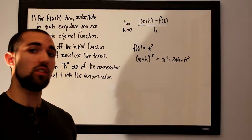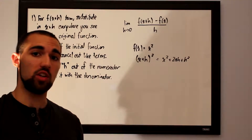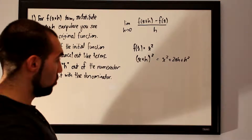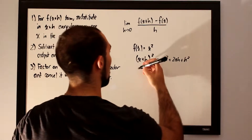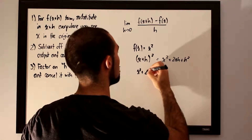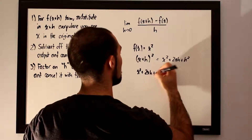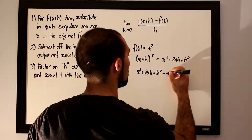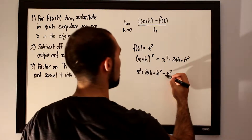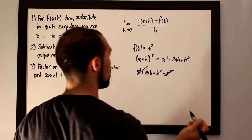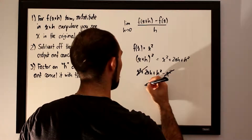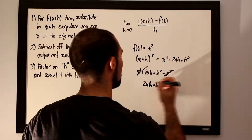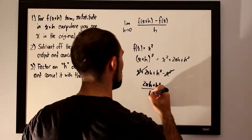Distribution is always going to be necessary when solving limit definition of derivative problems. Once you've done that, you subtract off the initial function, which in this case is just x squared. So we have x squared plus 2xh plus h squared, subtract x squared. Canceling those like terms leaves us with 2xh plus h squared over h in the denominator.